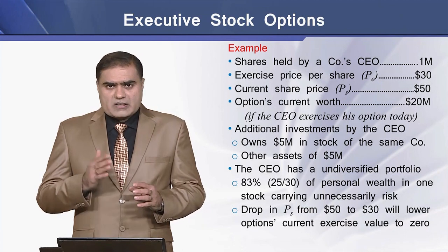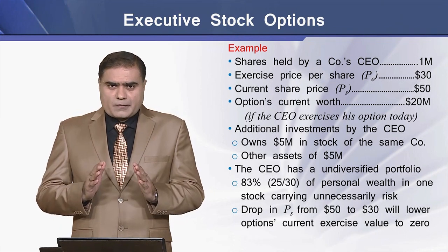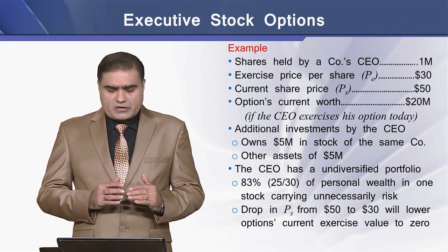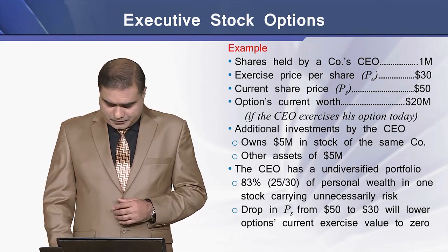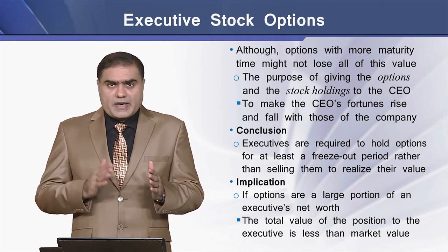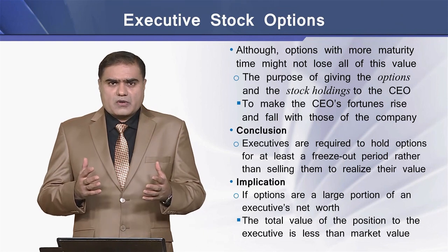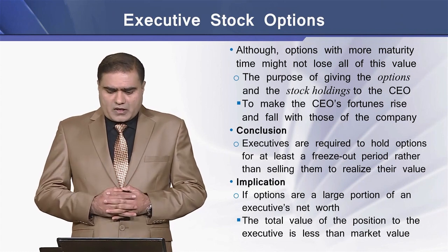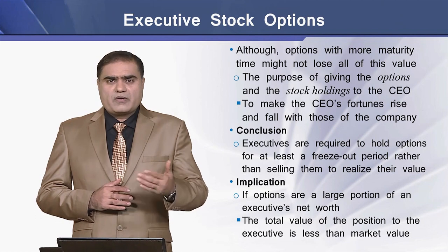That carries an unnecessary risk for the CEO. The implication of this risky portfolio is that any drop in the current stock price from $50 to $30 will lower the option's current value to $0. Although options with more time to maturity might not lose all their value, the purpose of guaranteeing options to the firm's CEO is to make the CEO's fortune rise and fall with that of the firm's fortune.